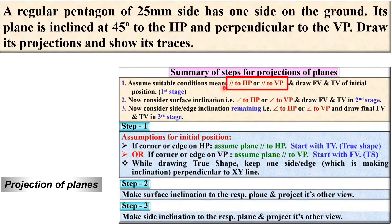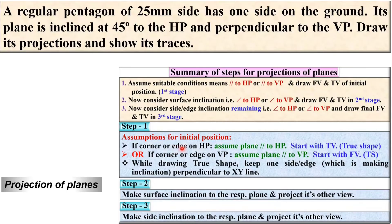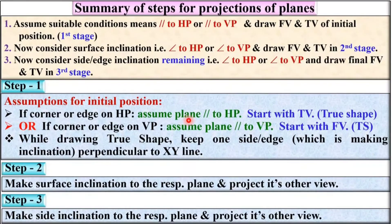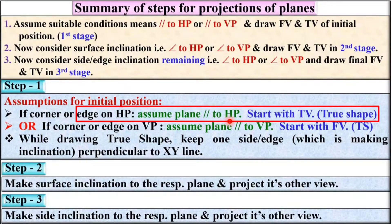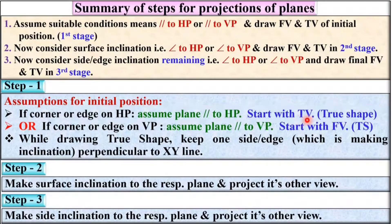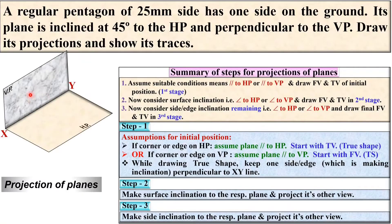In the first stage, you have to assume either the plane is parallel to HP or parallel to VP. Here it is given that one side or one edge is on the ground, that means on the HP, so you have to assume in step 1 that the plane is parallel to HP. Therefore you start with the top view, because you can see the true shape of the base in the top view.